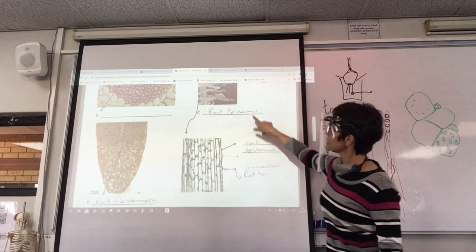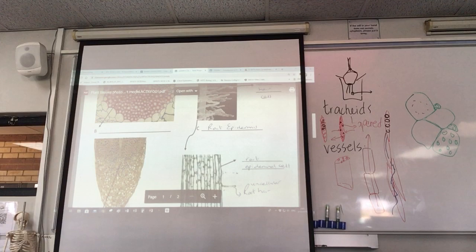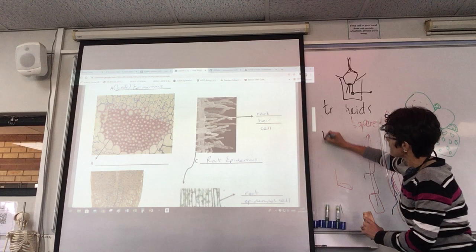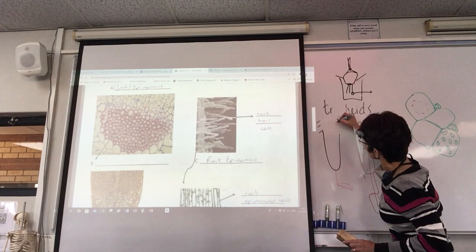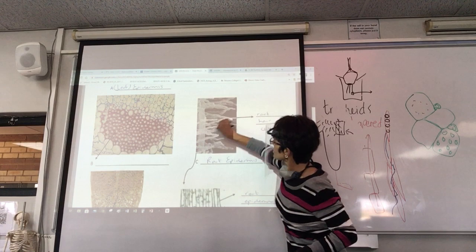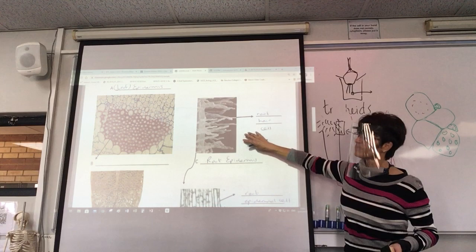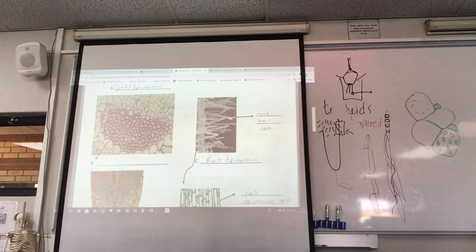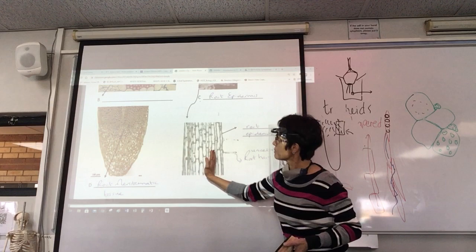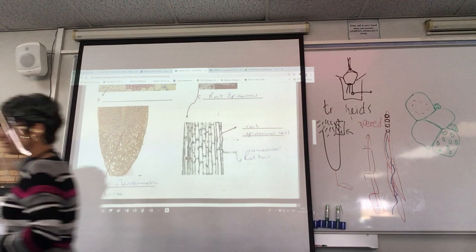Then the root epidermis — at the top there, a little bit further back from the tip, you can see little root hairs growing out: modified epidermis cells. And that's them from the side — there are the cells, there are the root hairs. That's taken with a light microscope. You can see the epidermal cells, and the root hair is part of the epidermal cell.